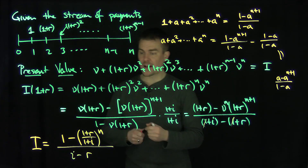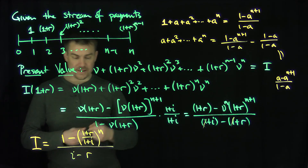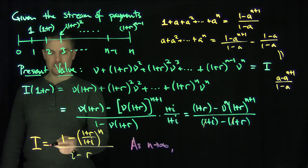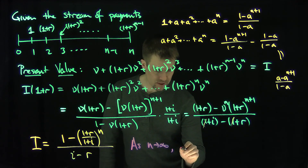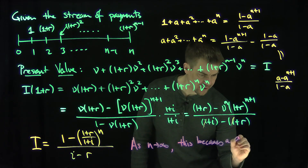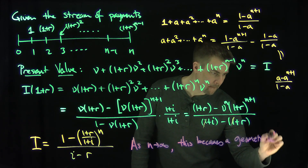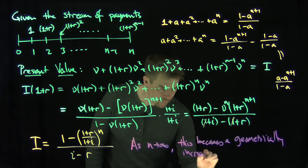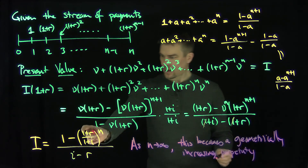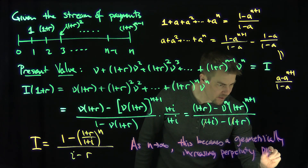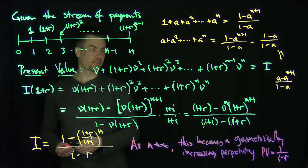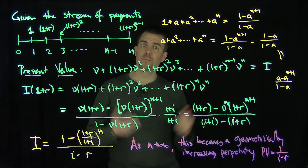One immediate consequence is that if we let n go to infinity, knowing that r is less than i, we get the present value of a geometrically increasing perpetuity immediate. As n goes to infinity, the term (1+r over 1+i) to the n goes to zero, so the present value of that infinite perpetuity is simply 1 over i minus r.